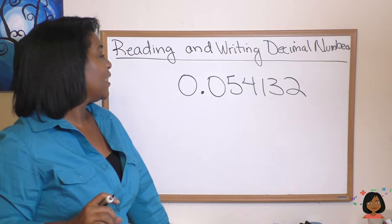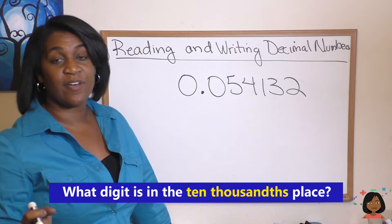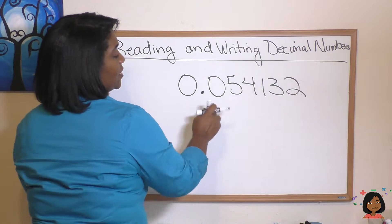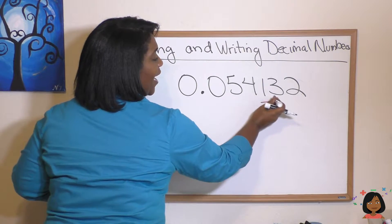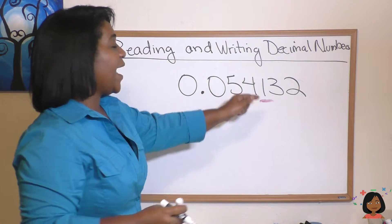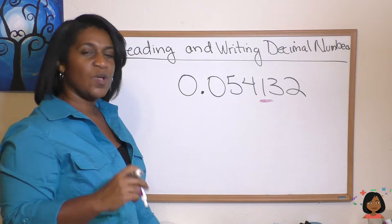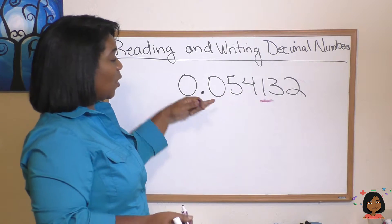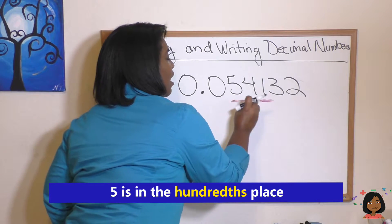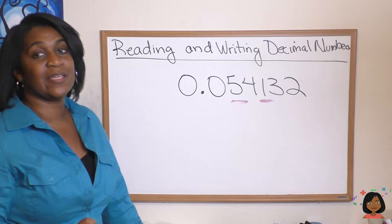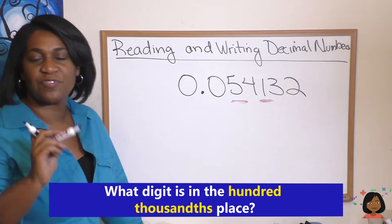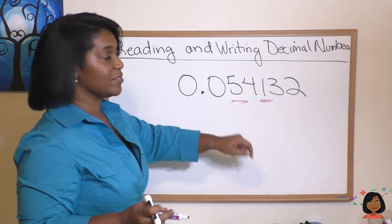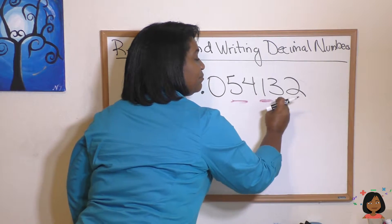Take a look at this nice long decimal. If I asked you which digit is in the ten-thousandths place, the first thing we want to do is go find that place. Starting from the decimal point: tenths, hundredths, thousandths, ten-thousandths — and we know that one is in the ten-thousandths place. If I reversed it and said tell me what place the five is in, we move out from the decimal: tenths, hundredths — so five is in the hundredths place. One more: what is in the hundred-thousandths place? Tens, hundreds, thousands, ten-thousandths, hundred-thousandths — that would be our three.